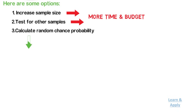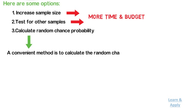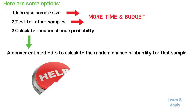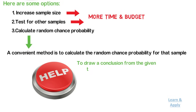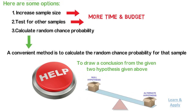So in such cases, a convenient method is to calculate the random chance probability for that sample — that is, what is the probability that the sample would have the average score of 85? It will help you to draw a conclusion from the given hypotheses. To do this, hypothesis testing comes into picture.